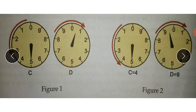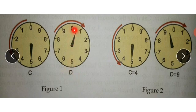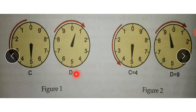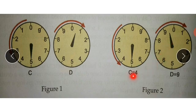To clarify the difference: if the pointer is directly pointing to a number, look at the next dial. If the next dial is on or just past zero, read the number as is — so C is five and D is one. But if the next dial is pointing between nine and zero, it has not yet passed zero, so read the lesser number: C is four and D is nine.